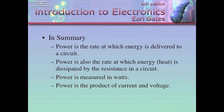In summary, power is the rate at which energy is delivered to a circuit. Power is also the rate at which energy or heat is dissipated by the resistance in a circuit. Remember, this is important that you understand. What is it that has resistance? Everything. Everything. So when current encounters resistance, it's going to be dissipated in the form of heat. When current encounters resistance, it generates heat. Power is measured in watts. Power is the product of current and voltage. When you multiply current times voltage, you end up with power. Any questions on anything in chapter 7 as it is associated with power?